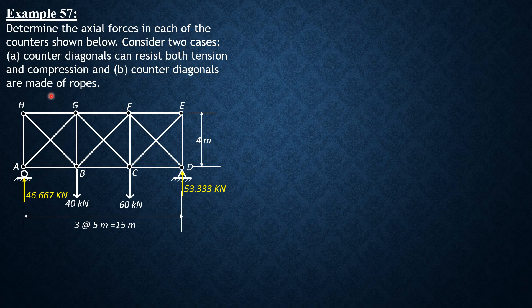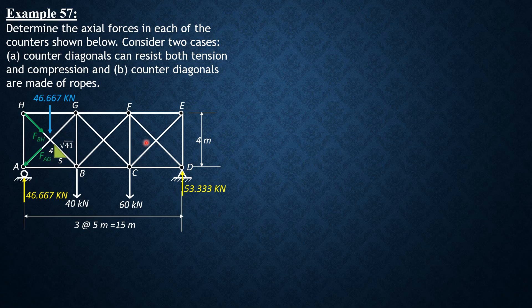So the panel shear in HD should be 46.667 kN downward. Then in BC, 46.667 kN minus 40, so it should also be downward, 6.667. And these are the expected forces. The force in BH should have its vertical component downward because the panel shear is downward. The vertical component of AG should also be downward, so BH is tension, AG is compression. And this is the slope: 5 horizontal, 4 vertical, square root of 41 hypotenuse.